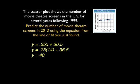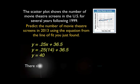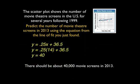So is our answer 40? We needed to predict the number of movie theater screens in 2013 using the equation from the line of fit you just found. We got y. We solved what y was. But is our answer 40? Well, no, our answer is not 40. Remember that the number of screens is done in thousands. So we would multiply 40 by 1,000. And we would get our prediction. There should be about 40,000 movie screens in 2013.